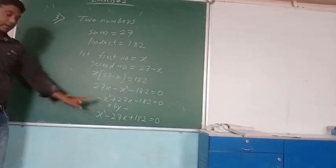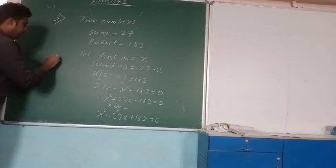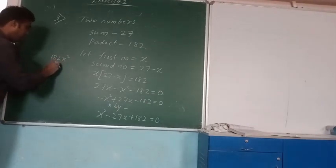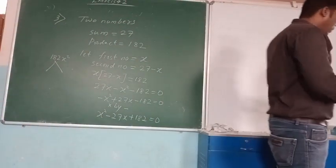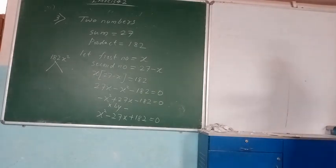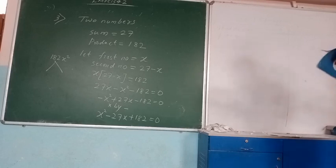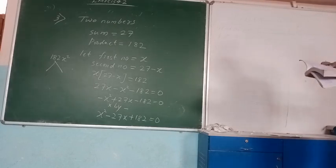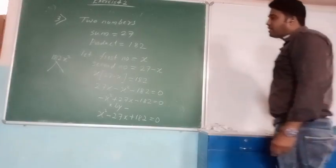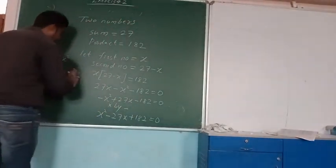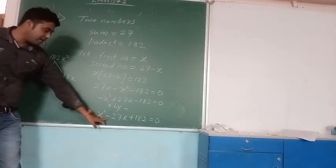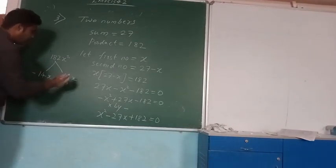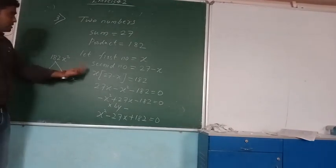Let us find the factors of 180. We need factors such that when added they give 27. The factors are 14 and 13 — since 14 plus 13 equals 27 and 14 multiplied by 13 equals 182. The sign is minus, so both factors will be minus: minus 14x and minus 13x.